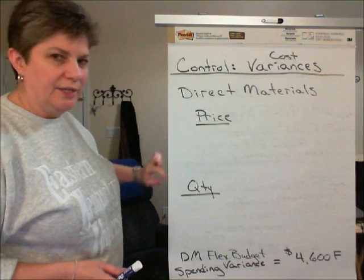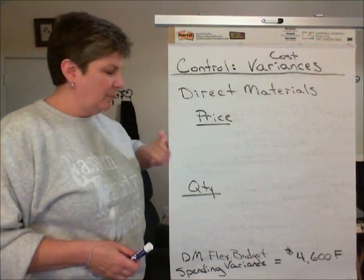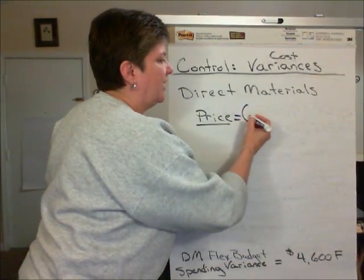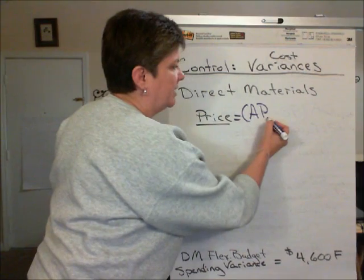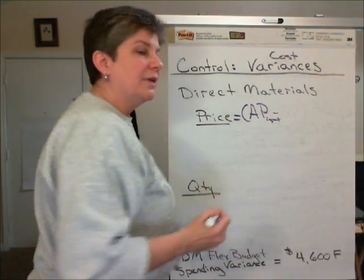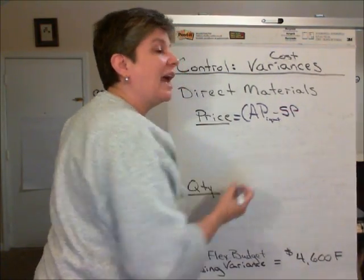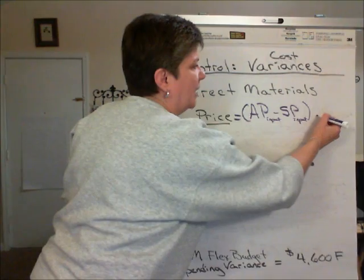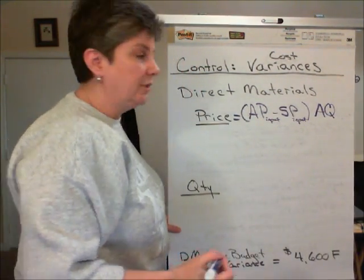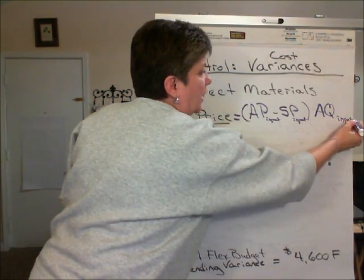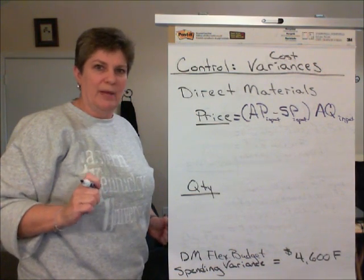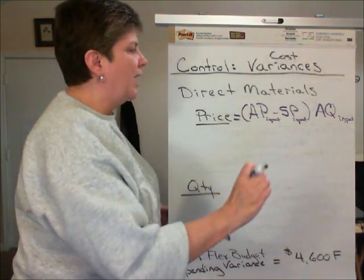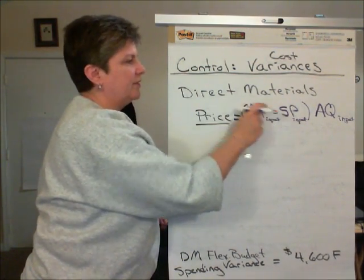The variances both break down into how much did we pay and how much did we use. The price variance for direct materials is calculated as the actual price that we paid for the materials minus the standard price that we should have paid for the materials, and then that multiplied times the actual quantity of the input that was used. Be careful not to pull the standard cost of the product — rather pull the standard cost of the input, in this case the raw materials.